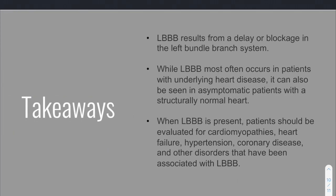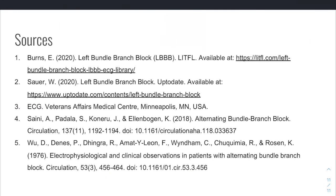Key takeaways: left bundle branch block has an underlying cause that delays or blocks the fast left pathway, producing opposite conduction from right to left with asynchronous ventricular contraction. It can be asymptomatic but is seen with cardiomyopathy, hypertension, heart failure, coronary artery disease, and anterior MIs. With your investigations and management, focus on the underlying cause rather than the bundle branch block itself. That's it for this week — stay tuned for more from RCSI Cardiovascular Society and ECG of the Week.